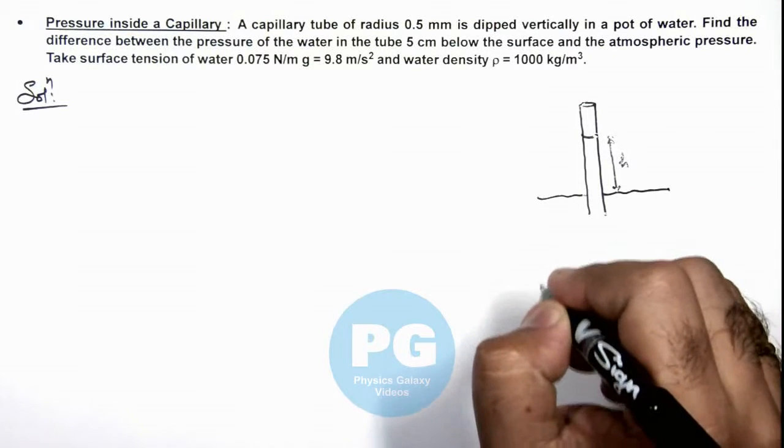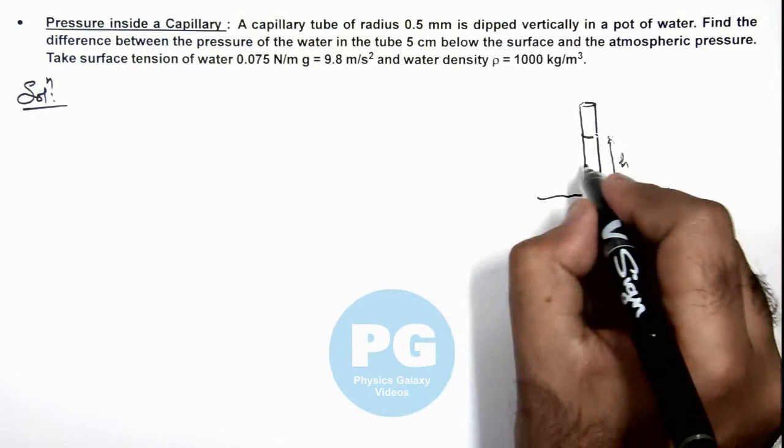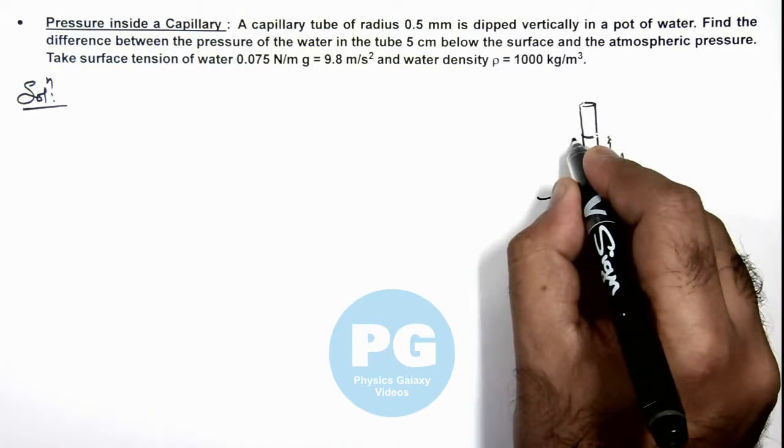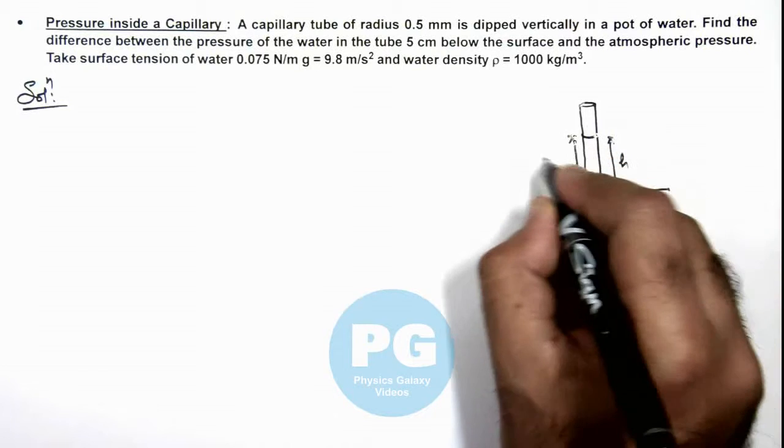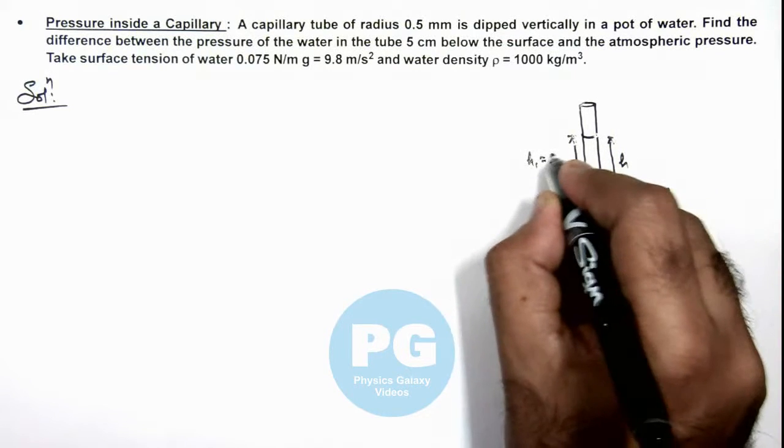In this situation we are required to find the pressure at a point which is at depth h₁ below the surface in the capillary, and the value of h₁ is given as 5 centimeters.